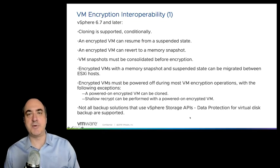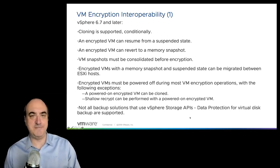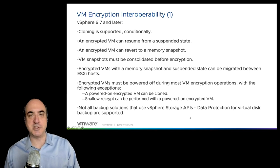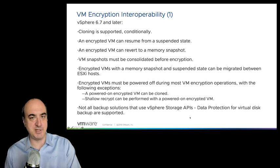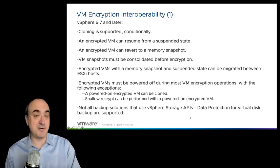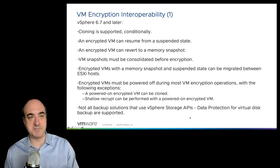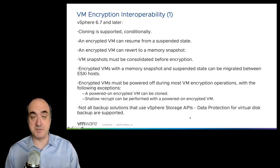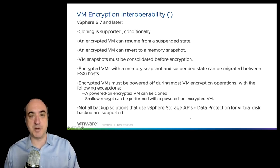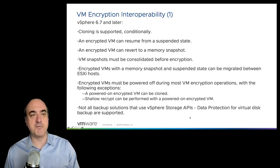First thing is, remember, it came out with 6.5. In 6.7, there were some new interoperability features added to the product. For instance, there is now support for cloning of an encrypted VM — you can actually change the format. You can have an encrypted VM that is decrypted as it's being cloned, or a decrypted VM that gets encrypted while it's being cloned. You can have an encrypted VM that can resume from a suspended state, and an encrypted VM can revert to a memory snapshot.